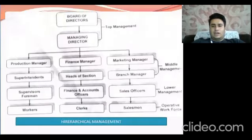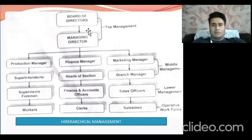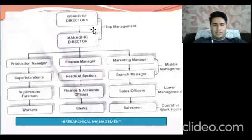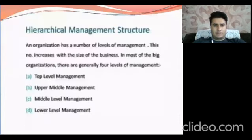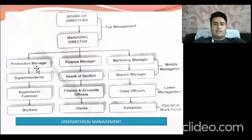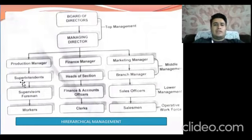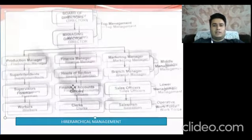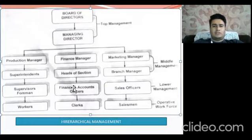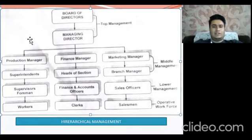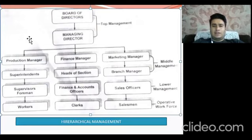In the hierarchical management structure: the board of directors and managing director form top-level management. After that, production manager, finance manager, and marketing manager are executed by the board of directors. Next are superintendents, head of section, and branch manager. Then supervisors, finance and accounts officers, and sales officers. Finally, lower-level management consists of workers, clerks, and salesmen.